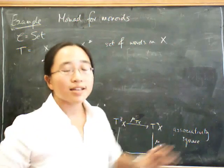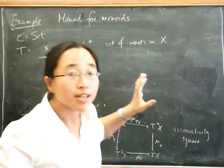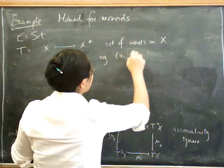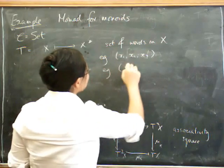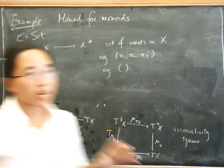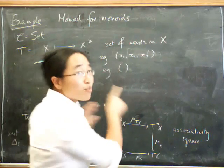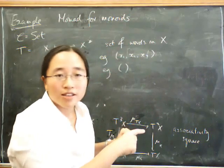which I'm going to write as x star, and it's the set of words in x. What's a word in x? It's a list of the objects of x, a finite list. It could be an empty list. So for example, you might have x1, x2, x3. You can also have the empty list, which is a bit of a strange list. I wish all my shopping lists were empty. But it's a very important list, because of course it's going to give us the identity, the unit for the monoid.